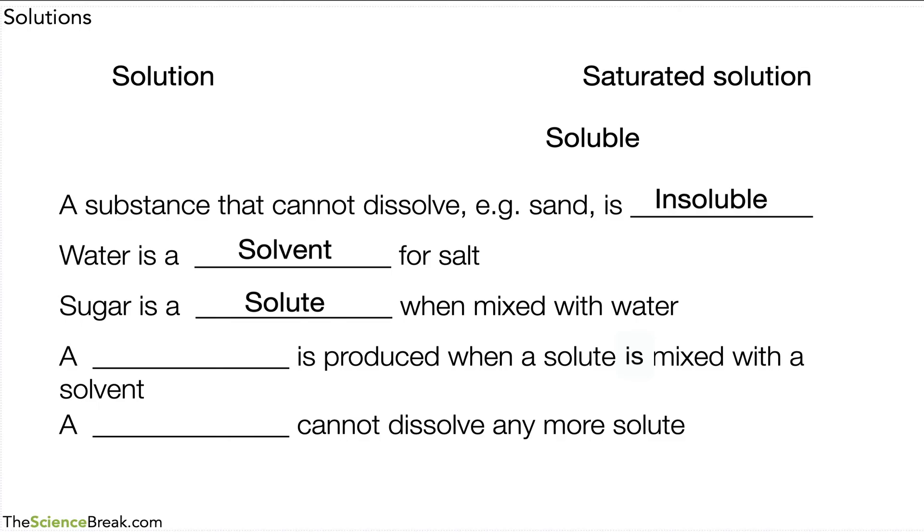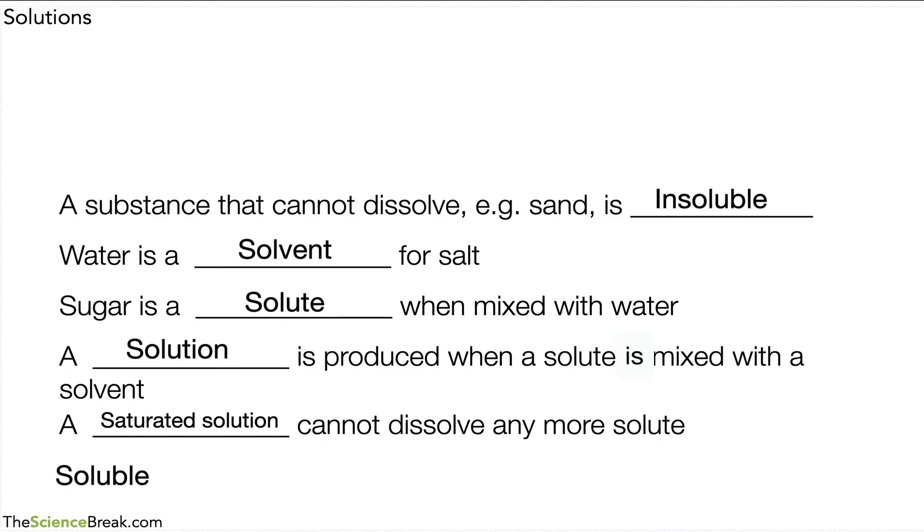a solute when mixed with water. A solution is produced when a solute is mixed with a solvent. And a saturated solution cannot dissolve any more solute. The one that we didn't use was the word soluble, and if we wanted to put a definition of that, we could say that soluble is a substance that can dissolve in a solvent or in a liquid.